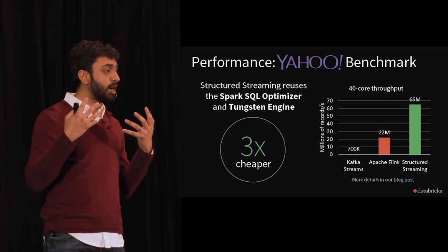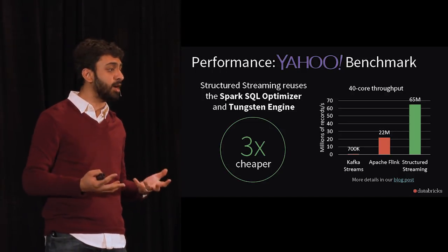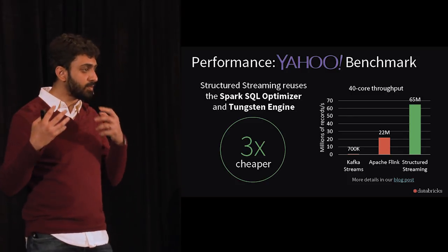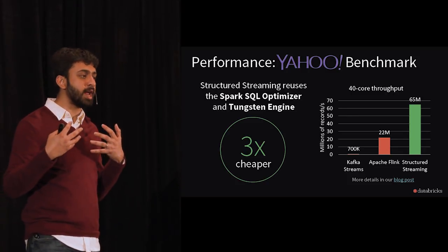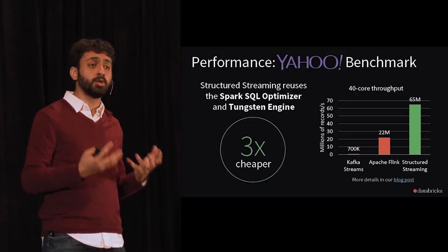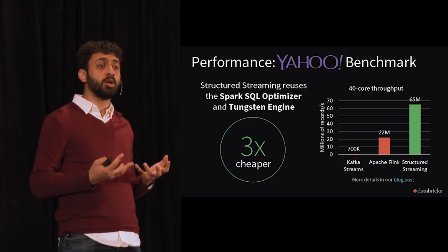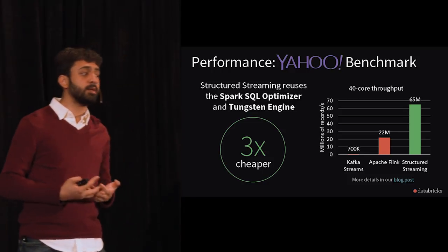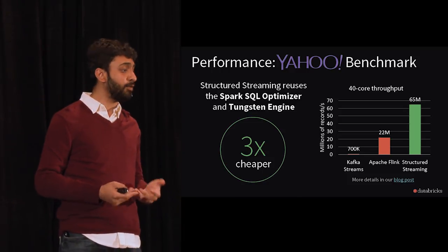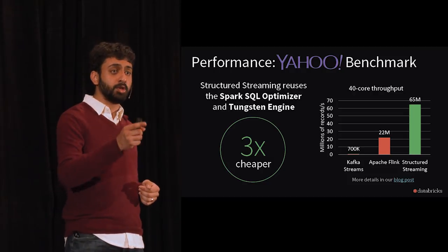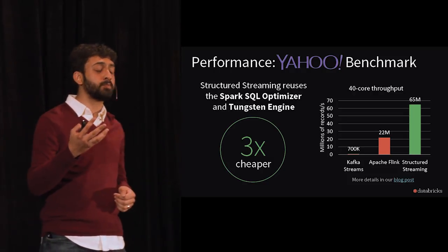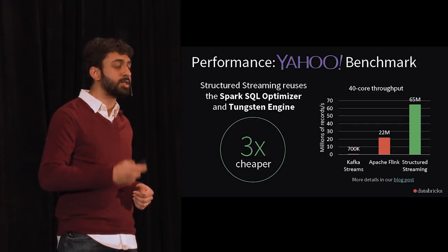This is also really fast. We ran the Yahoo benchmark on both Spark and Flink to compare raw throughput performance, and in a 40-core, 10-cluster setting, we were almost 3x faster than the nearest competitor, Apache Flink. For your requirements, that essentially means it will be 3x cheaper to run on Apache Spark.